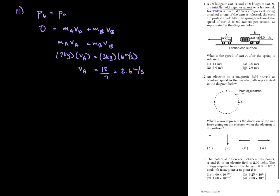Number twelve: an object moves in a circular path and we're looking for the direction of net force. Circular motion means centripetal force, which is always directed toward the center. At point B it's upward, at point C it's to the right, at point D it's downward, and at point A — the one asked about — it's to the left.